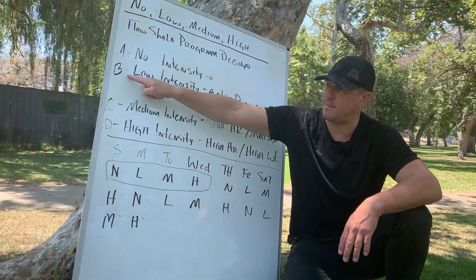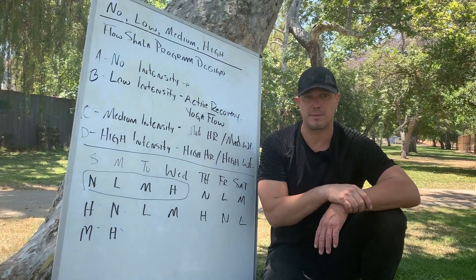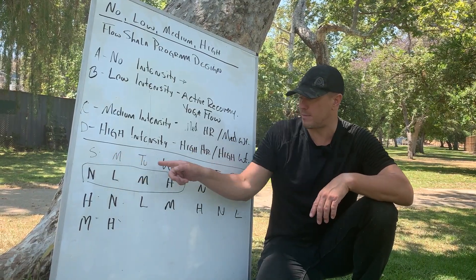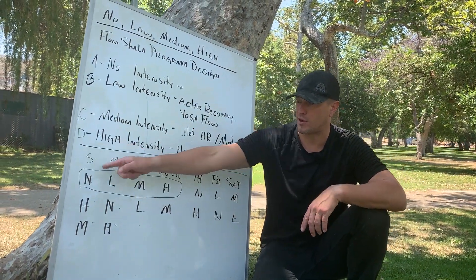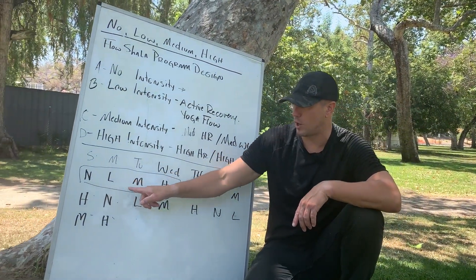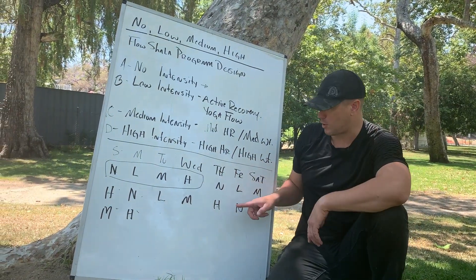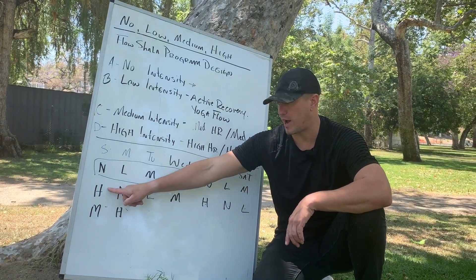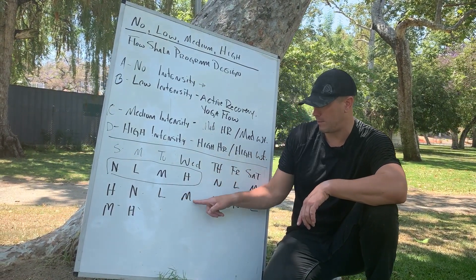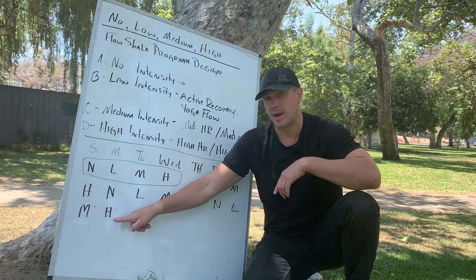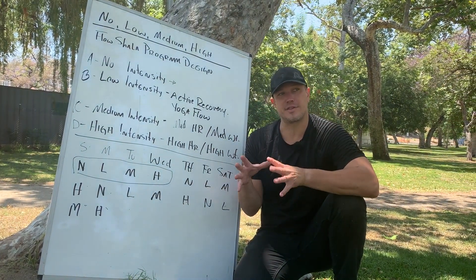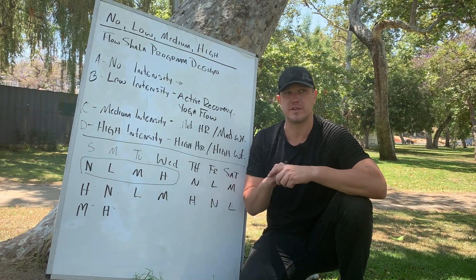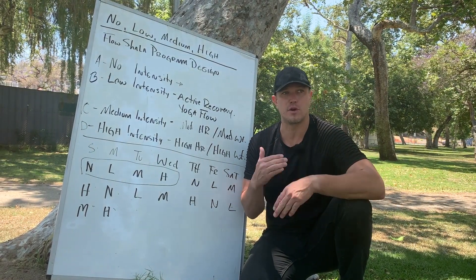Think of this as an ABCD program design. What makes this interesting is it doesn't fit in a week. If we start the program, we have no, low, medium, high — and then it starts over: no, low, medium. Then the next week starts with high. The weeks aren't the same — they stagger. It's a built-in wave of intensity which repeats over and over again.